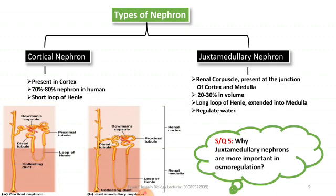There is an important question also mentioned in the book: why are juxtamedullary nephrons more important in osmoregulation? The answer is that because the loop of Henle in the juxtamedullary nephron is long, it can more easily balance water. That is why its importance is greater in osmoregulation.